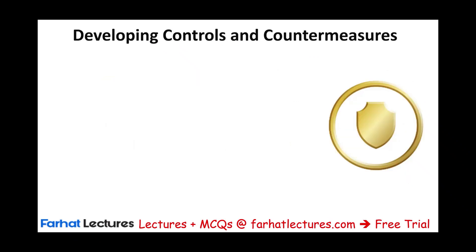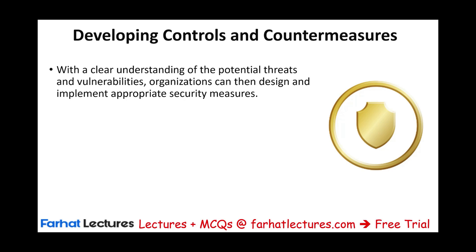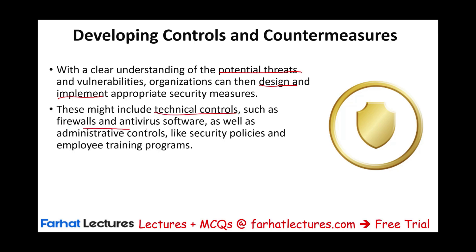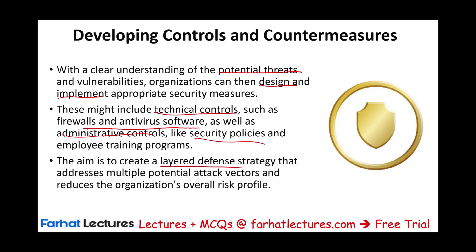Once you understand the attacks, you want to develop controls and countermeasures — knowing the threats but doing nothing about them is useless. With a clear understanding of potential threats, the company designs and implements appropriate security measures. These could include technical controls like firewalls and antivirus software, or administrative controls like security policies, employee training, and bringing in specialists. The aim is to create a layered defense strategy that addresses multiple potential attack vectors, reducing the risk of a successful attack on your data, servers, network, and systems.